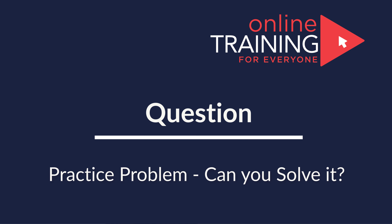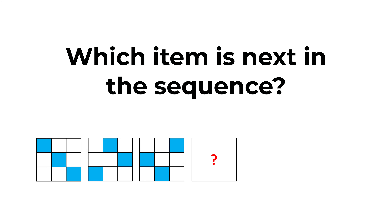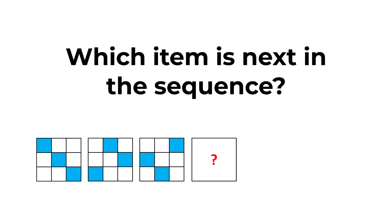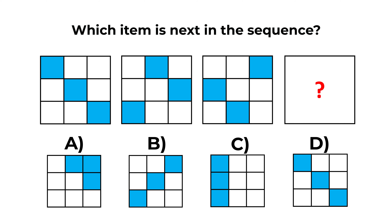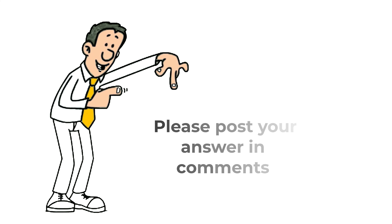Here's a practice problem: determine which item comes next in the sequence. You're presented with three large squares, each containing nine small squares of different colors. The fourth square is missing and you have four choices — A, B, C, or D. Give yourself 10 to 15 seconds. Post your solution and rationale in the comment section so I can give you feedback.